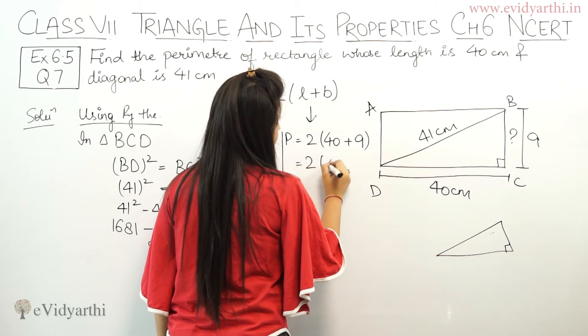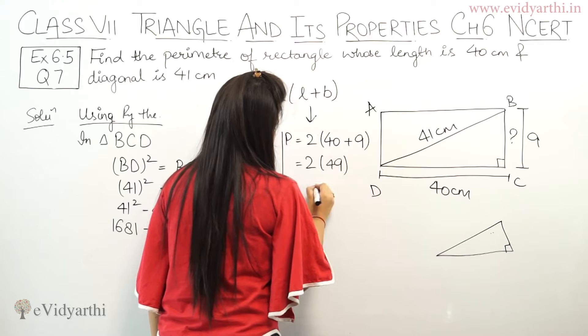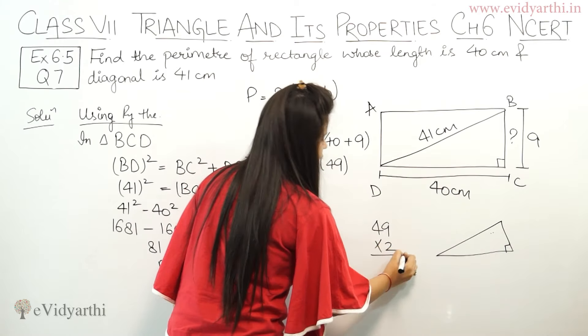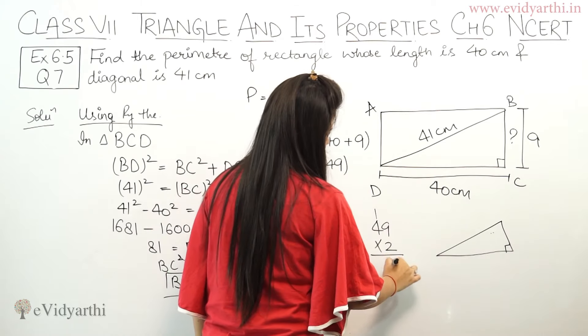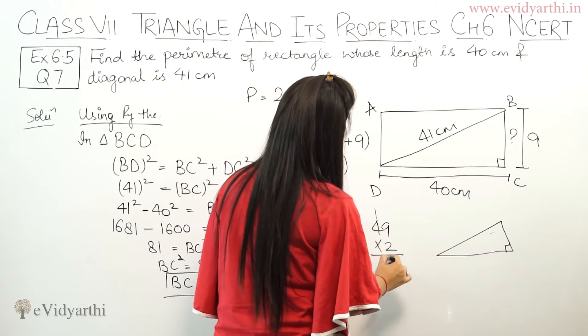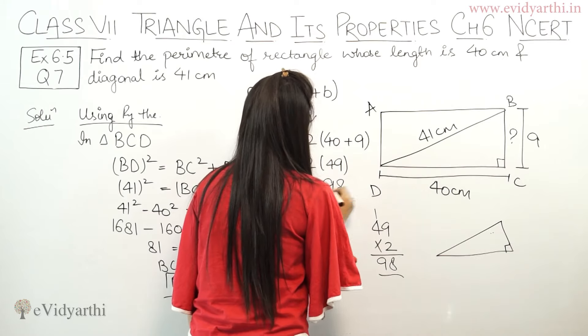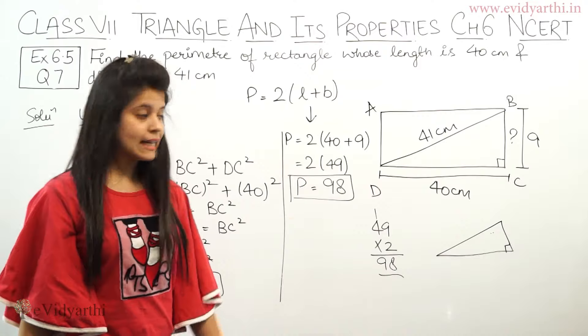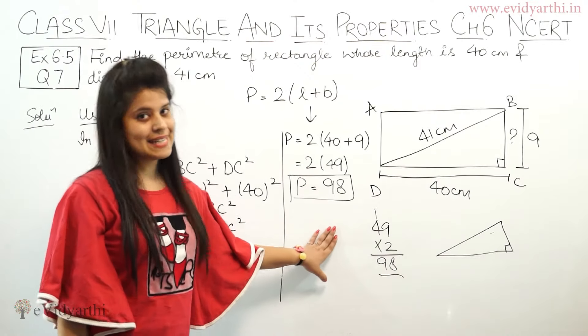So 2 times, 40 plus 9 is 49. Now let's multiply this. So 49 into 2 will be 98. So we get 98. This means the perimeter of the rectangle that you had to find is 98 centimeter.